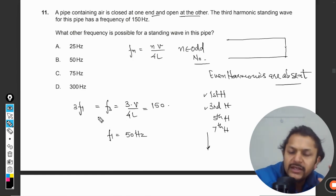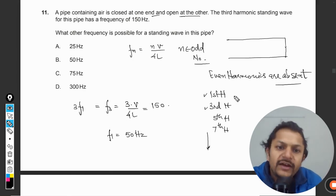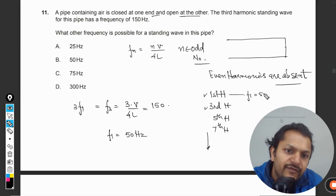Like 150 divided by 3. So it means that if you refer to the first harmonic, your frequency will be 50 hertz.